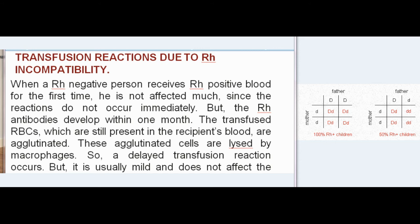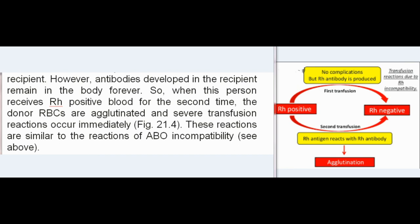Transfusion Reactions due to Rh Incompatibility: When an Rh negative person receives Rh positive blood for the first time, they are not affected much since reactions do not occur immediately. However, Rh antibodies develop within one month. The transfused RBCs still present in the recipient's blood are agglutinated and lysed by macrophages, causing a delayed but usually mild transfusion reaction. However, antibodies developed in the recipient remain in the body forever. When this person receives Rh positive blood for the second time, donor RBCs are agglutinated and severe transfusion reactions occur immediately.